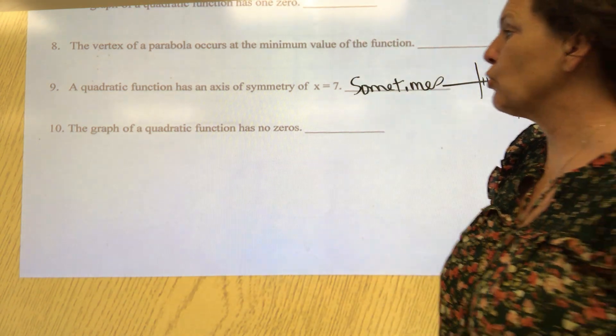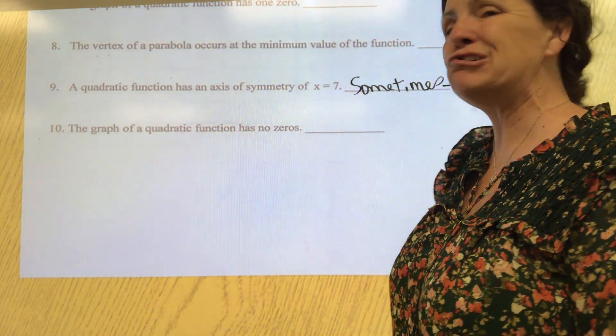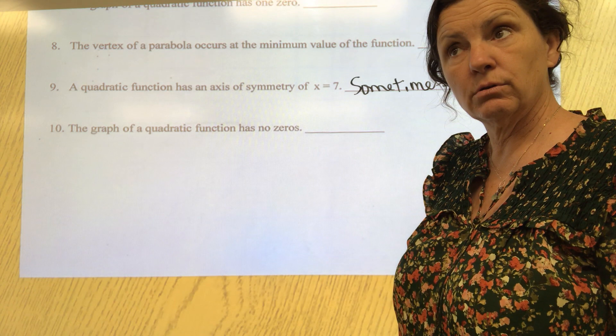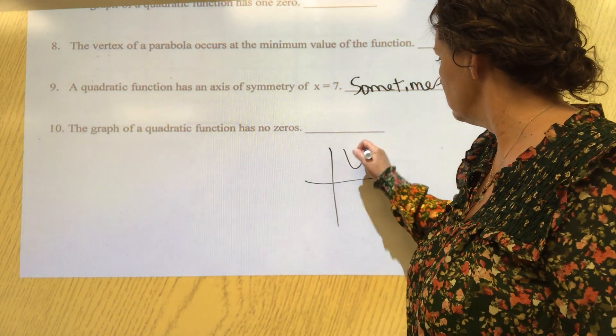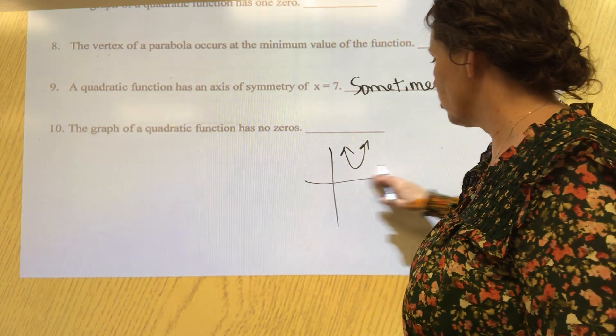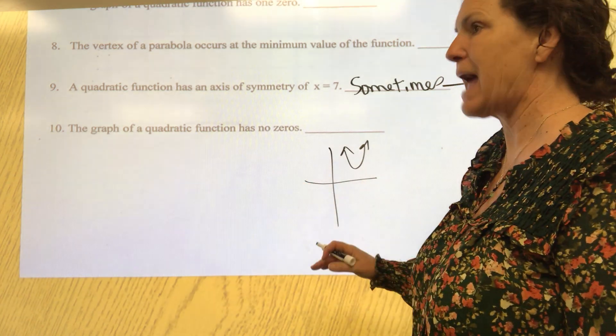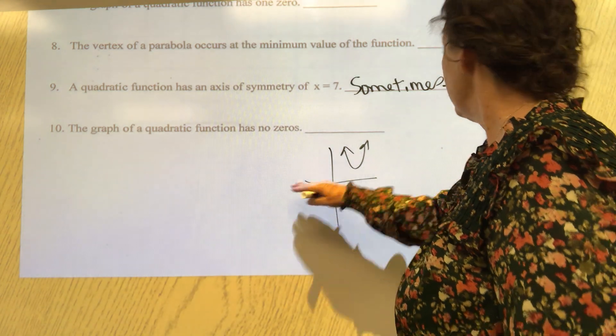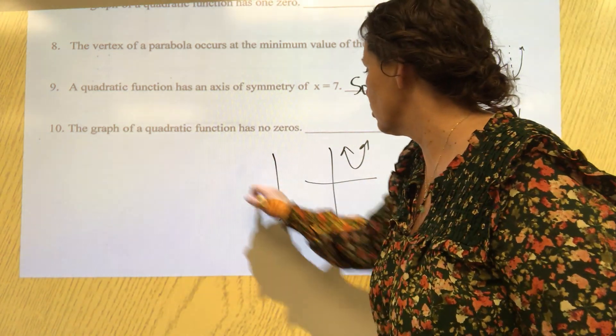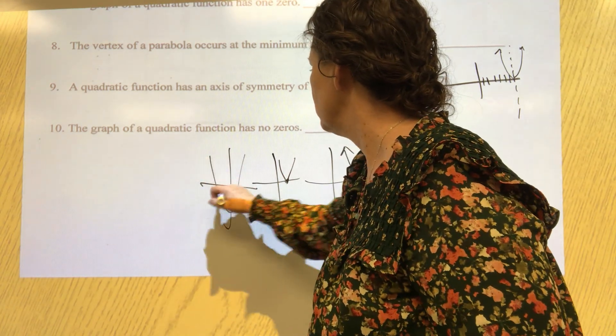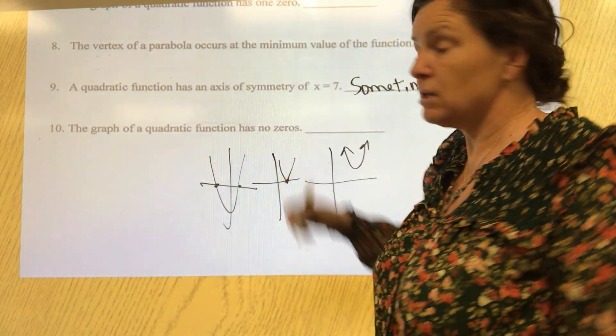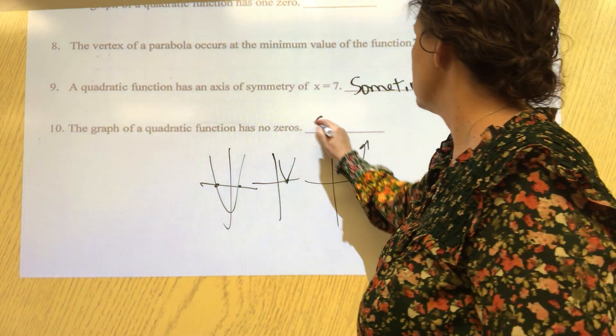Last but not least: the graph of a quadratic function has no zeros - sometimes, right? This one never crosses the x-axis, this one crosses once, this one crosses two times. So no zeros - that can happen sometimes. We're going to go sometimes on that one.